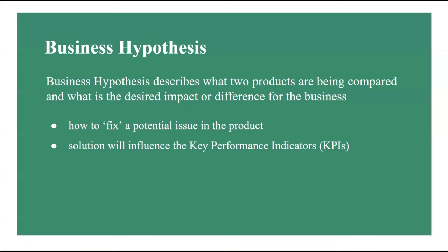To ensure results are repeatable, robust, and can be generalized to the entire population, we need to avoid p-hacking and ensure real statistical significance, collecting enough observations and running the test for a minimum predetermined amount of time. Therefore, before running the test we need to determine the sample size of the control and experimental groups. The calculation of the minimum sample size depends on the defined power (1 − β), the significance level α, the minimum detectable effect δ, and the underlying primary metric you have chosen.